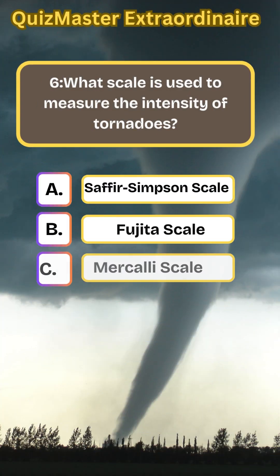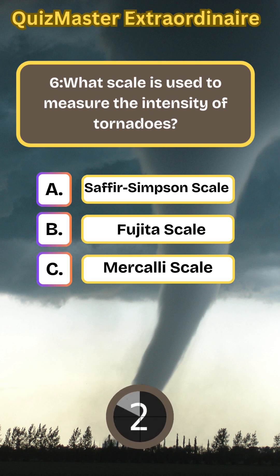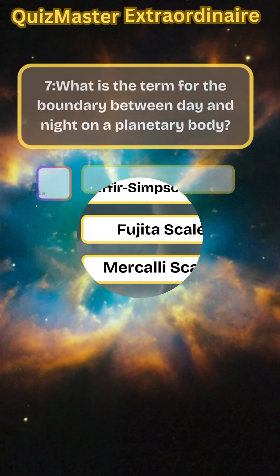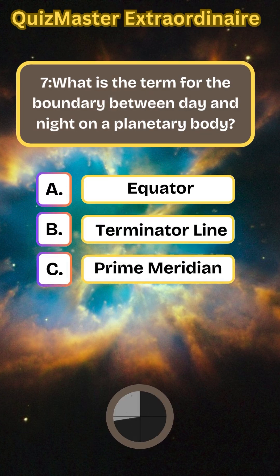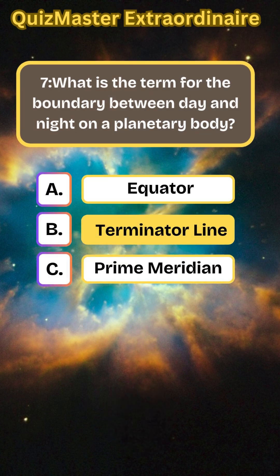What scale is used to measure the intensity of tornadoes? The Fujita scale. What is the term for the boundary between day and night on a planetary body? Terminator line.